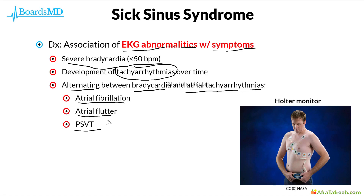As you will notice, these tachyarrhythmias are all originating above the ventricle, as this is ultimately a disease of the sinus or sinoatrial node. Therefore, it should not be surprising that the tachyarrhythmias we see include a-fib, a-flutter, and PSVT.